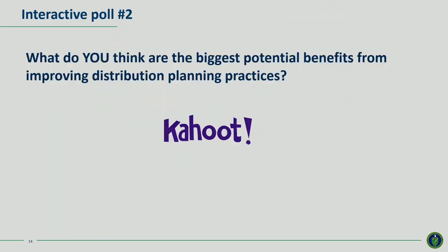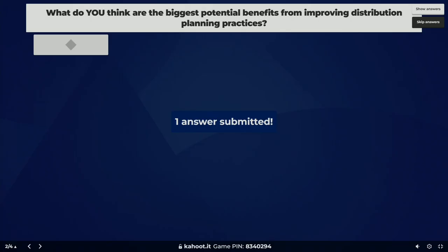We're ready for our next poll. This one is about you: what do you think are the biggest potential benefits from improving distribution planning processes — that is, objectives-based, stakeholder-engaged, and longer-term?